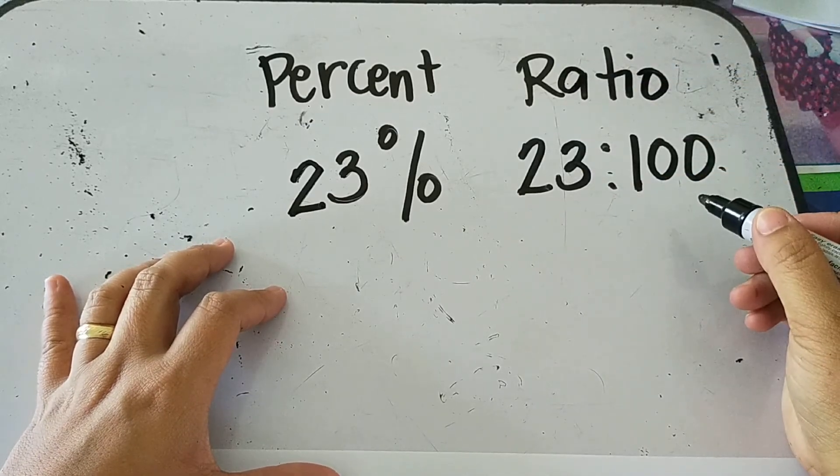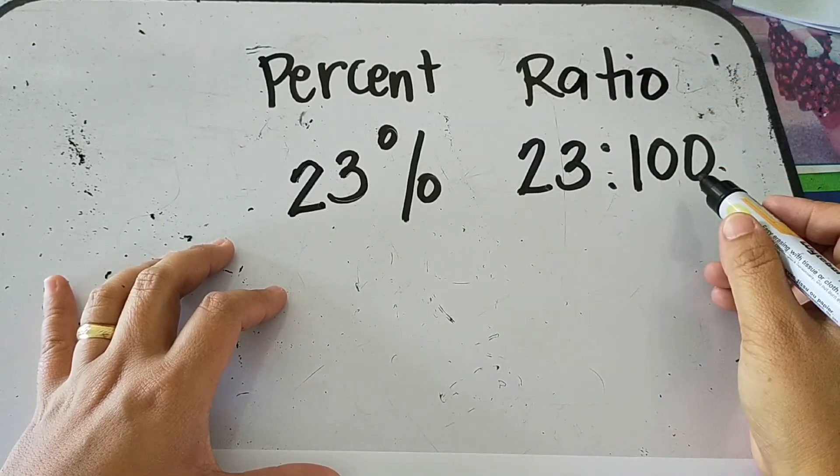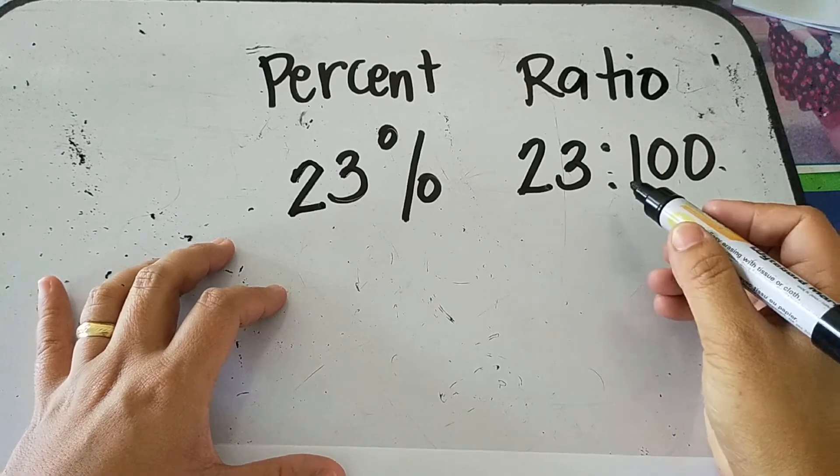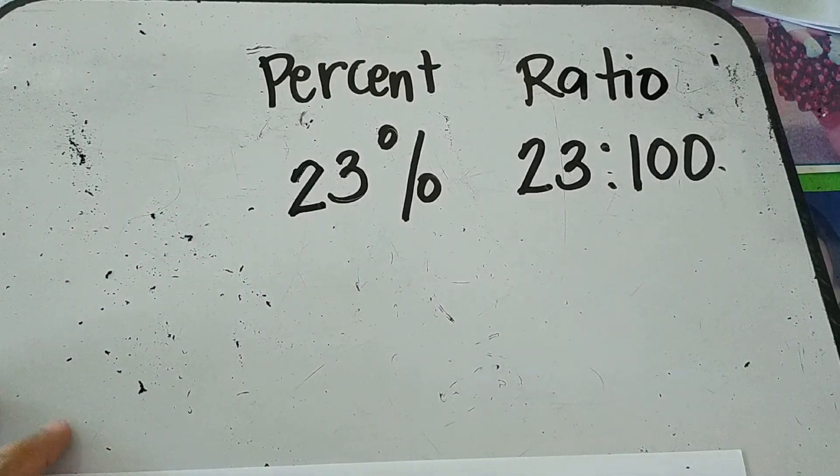There's no need for you to reduce it into lowest term. There's no GCF for 23 and 100. Okay. So that's all for now. Thank you for watching.